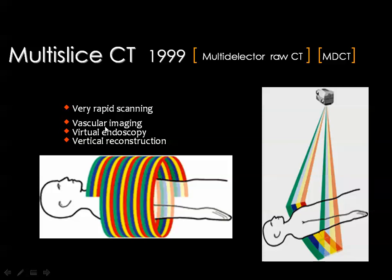Virtual endoscopy allows you to travel through any tube in the human body using the virtual endoscope built into the CT scanner. Reconstruction of images in vertical planes — coronal, sagittal, oblique, and all planes — can be done immediately and easily.